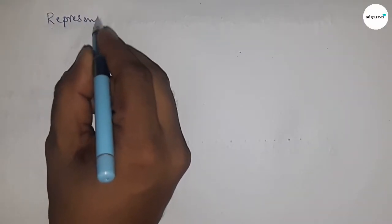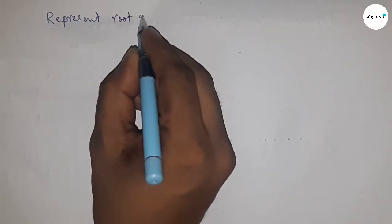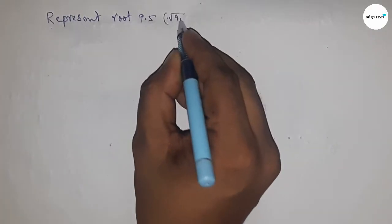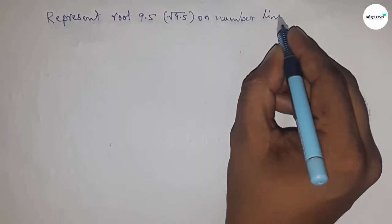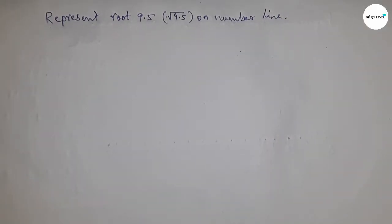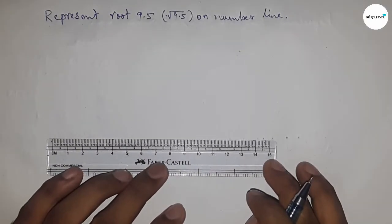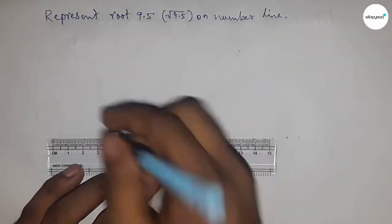Hi everyone, welcome to Accessory Classes. Today we're talking about how to represent √9.5 on a number line. Let's start by drawing a line of any length.